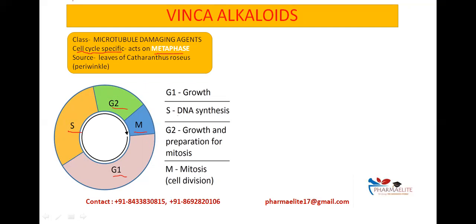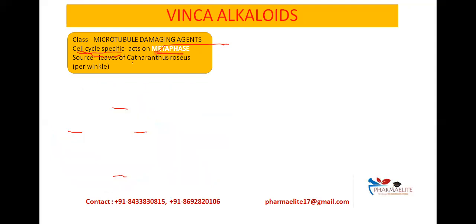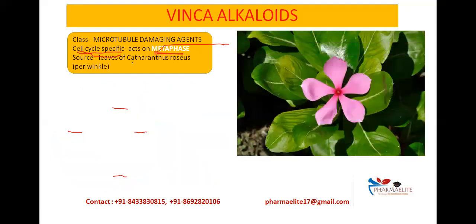The Vinca alkaloids are cell cycle specific in nature and specifically act on the metaphase. Their main source is the leaves of Catharanthus roseus plant, also known as periwinkle. The part from which they are obtained is the leaves — not the flowers, but the leaves of the Catharanthus roseus plant.